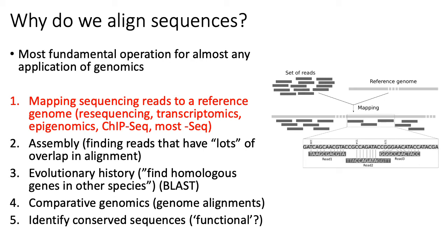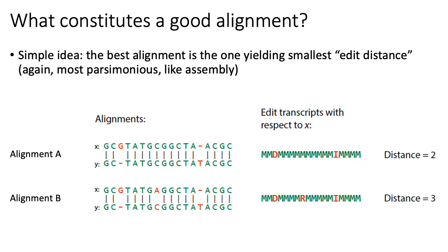An important question is: what constitutes a good alignment? For a given pair of sequences X and Y, there are multiple possible alignments. Here I'm showing two examples, alignment A and alignment B. You need a way of judging which of a set of possible alignments is the best. The simple idea is that the best alignment is one that yields the smallest edit distance.